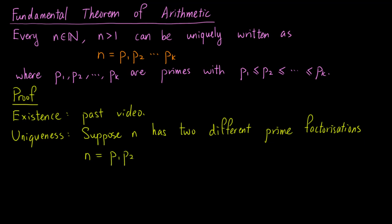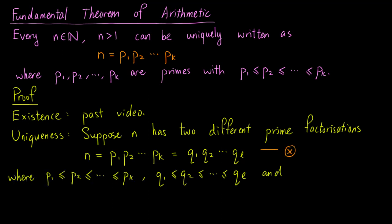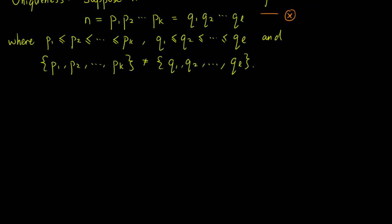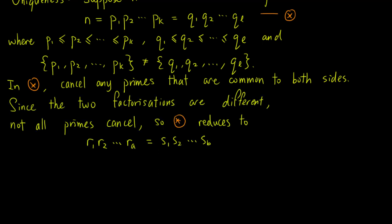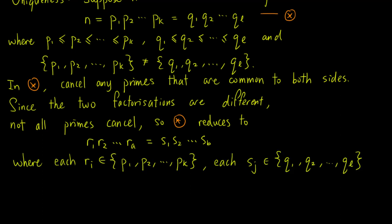For the uniqueness, suppose that n has two different prime factorizations, say p1, p2 up to pk and q1, q2 up to ql. Call this (★). The p1 up to pk are arranged in ascending order, as are q1, q2 up to ql, and the set {p1, ..., pk} is not equal to the set {q1, ..., ql} — meaning the primes in the two factorizations are not all the same. In (★), we can cancel any primes common to both sides. Since the two factorizations are different, not all primes cancel, so (★) reduces to r1 up to ra equals s1 up to sb, where each ri is from {p1, ..., pk} and each sj is from {q1, ..., ql}, and ri is not equal to sj for all i and j, because we have cancelled all primes that are equal.